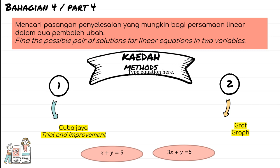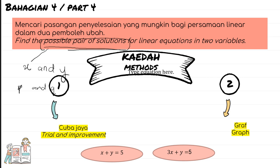Part four: finding possible pairs of solutions for linear equations in two variables. There are two methods — the trial and improvement method and the graph method. We say 'possible pair of solution' because it involves two variables, x and y. Any letters can be used as long as there are two variables.